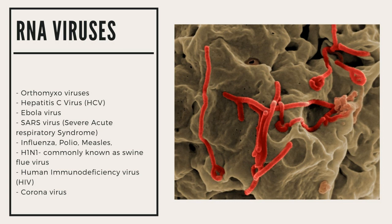Here is a list of some RNA viruses: orthomyxoviruses; hepatitis C virus; Ebola virus, the picture of which is shown on the screen — we had a pandemic of Ebola in 2014; SARS virus, that is severe acute respiratory syndrome — the world had a pandemic of SARS in 2004, and again the origin was in China; influenza virus; polio virus; measles virus; and H1N1, commonly known as swine flu virus — we had a pandemic of H1N1 in 2009.